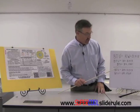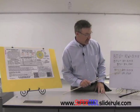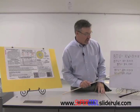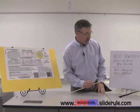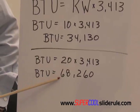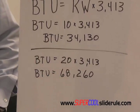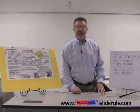If we wanted to do a 20KW heater, instead of 10, we substitute in the 20 times 3413. A 20KW heater gives us 68,260 BTUs of heat. That concludes the video on determining BTU output of a KW heater.